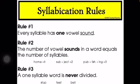Rule number two. Екінші ереже. The number of vowel sounds in a word equals the number of syllables. Сөздегі дауысты дыбыстардың саны бұғындардың санына тең.